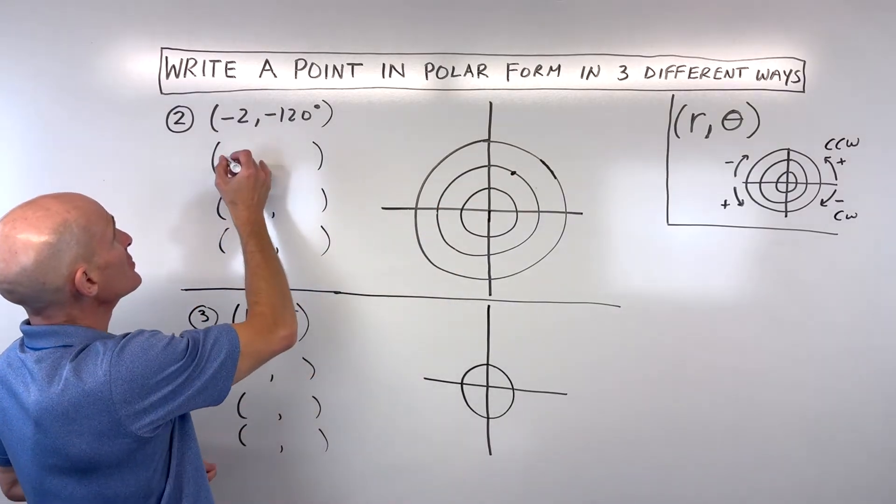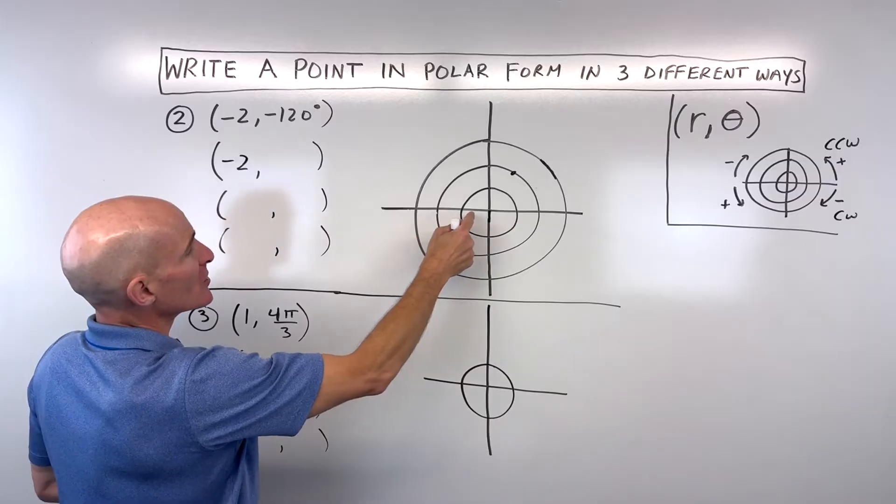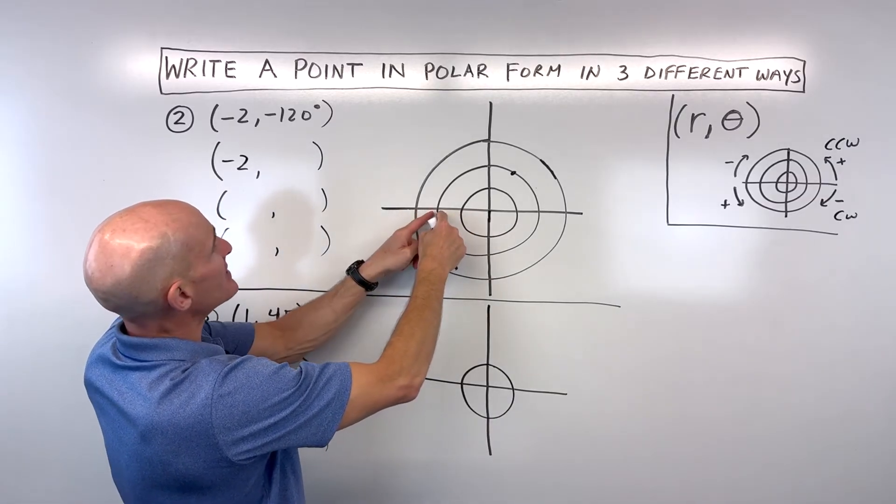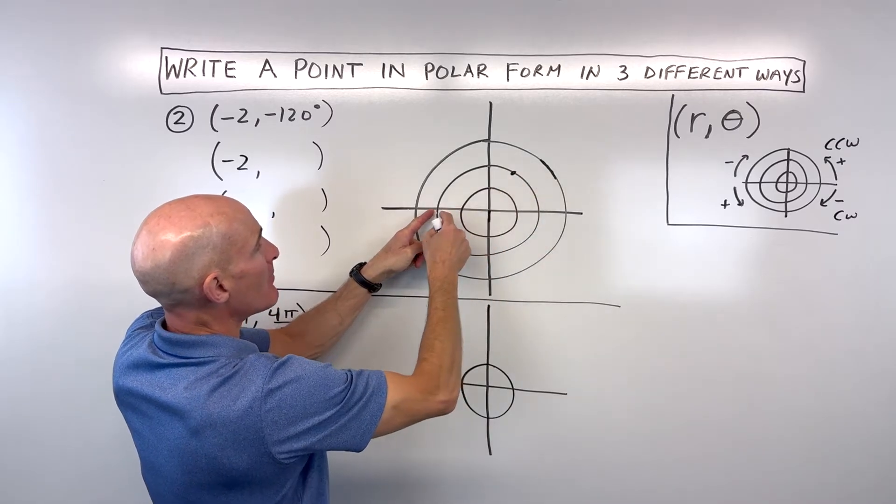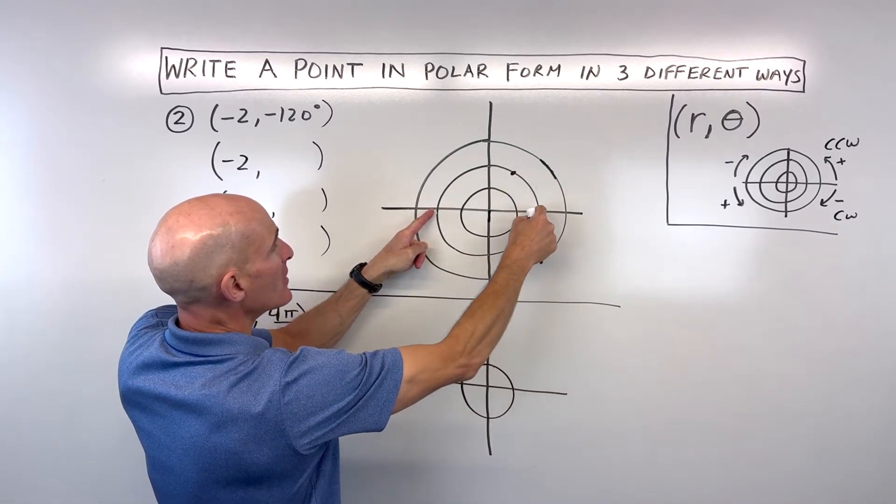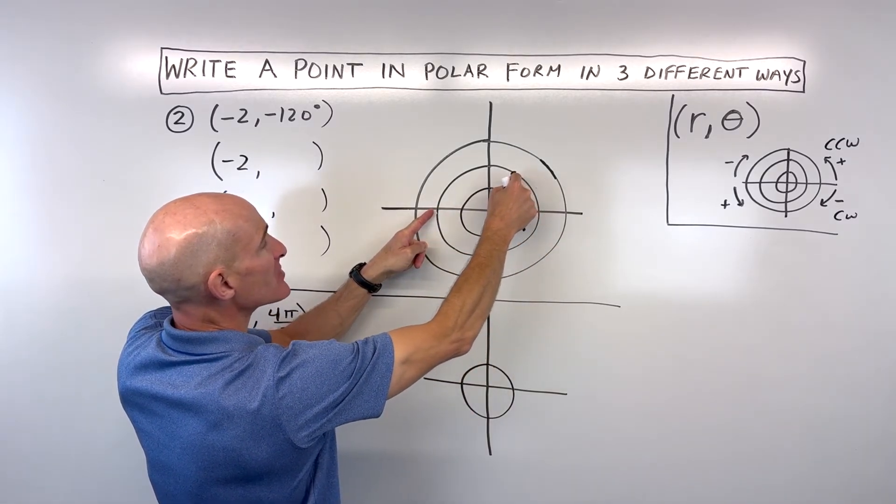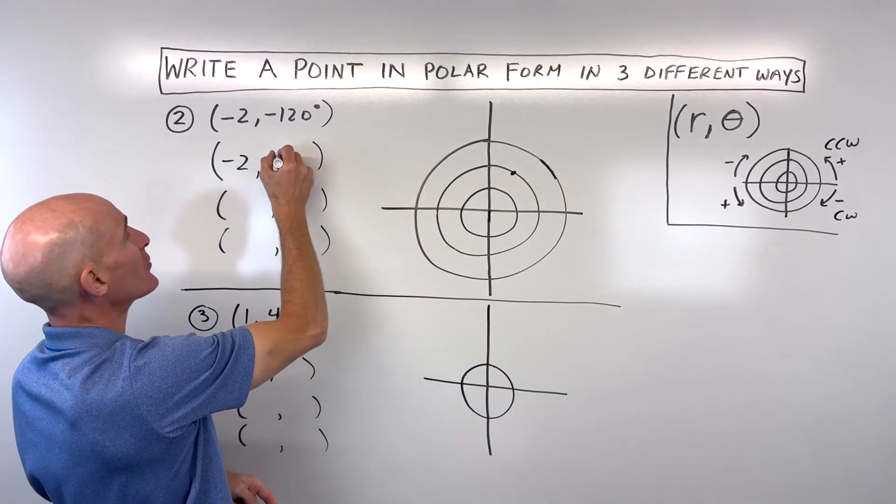What's another way to represent this location? Let's do negative two again here. We're going to go left two. Instead of going negative 120, let's go counterclockwise, that's a positive angle: 180 plus another 60, which is 240 degrees.